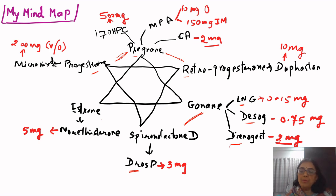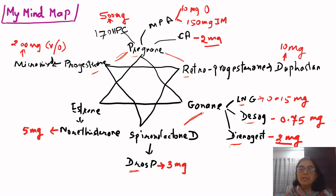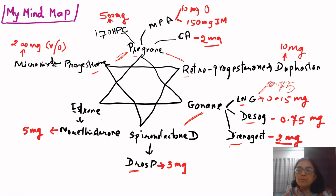Each person's mind map may differ, as it captures at a glance what you want to retain. Dosages are included because they are often difficult to remember — for example, dienogest is 2 mg, cyproterone is 2 mg, desogestrel is 0.075 mg, and LNG as an emergency pill is also 0.075 mg. Noting these similarities helps memorize difficult details.